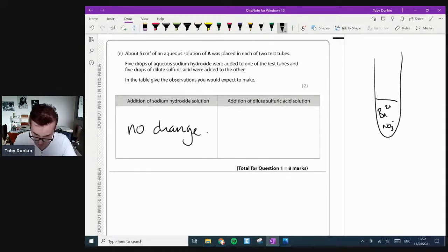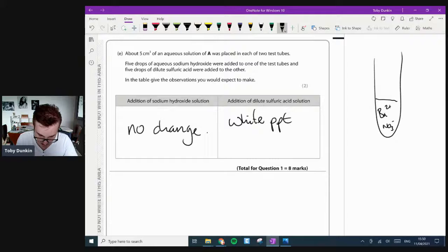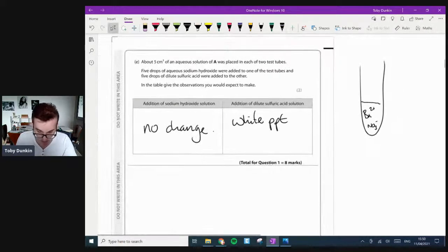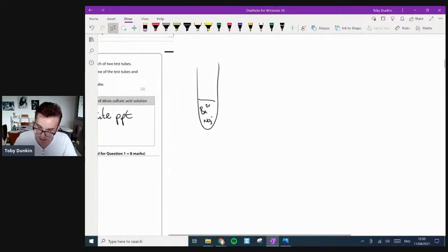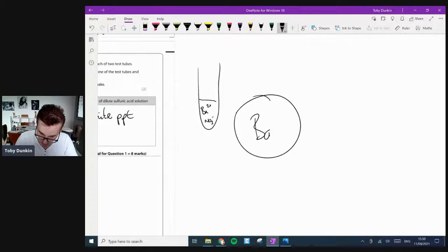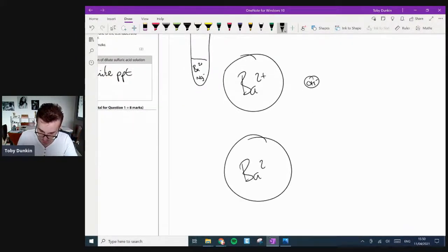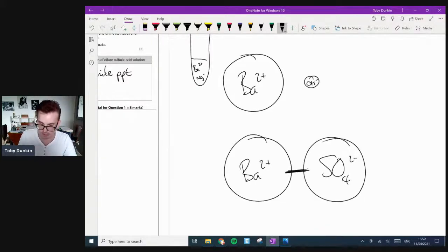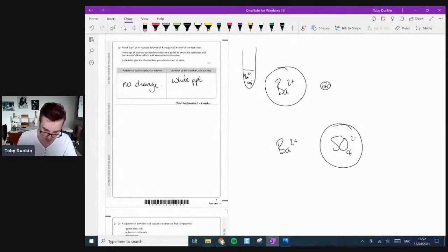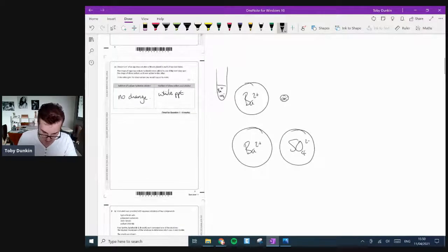Five centimeters cubed of aqueous solution of A was placed in two test tubes. So they've put barium nitrate. So I'm going to have barium two plus and nitrate ions. Addition of sodium hydroxide would form barium hydroxide, which is very soluble. So no change. However, the addition of sulfuric acid will form a white precipitate. In the table, give you observations.